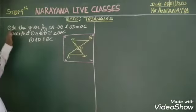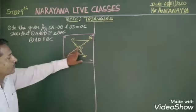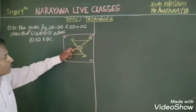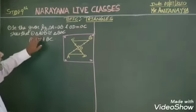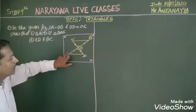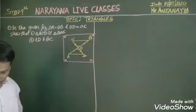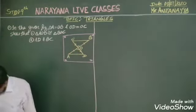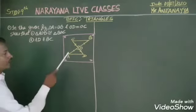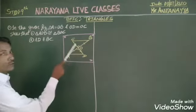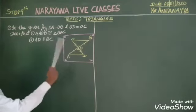they have given us, in the given figure, OA is equal to OB, and OD is equal to OC. I have to prove that triangle AOD is congruent to triangle BOC.